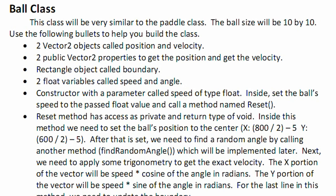The Reset method has an axis of private and return type of void. Inside, we need to set the ball's position to the center of the window, which is the x part of the vector is 800 divided by 2 minus 5. The y part is 600 divided by 2 minus 5. After the ball is centered, we need to find a random angle by calling another method.